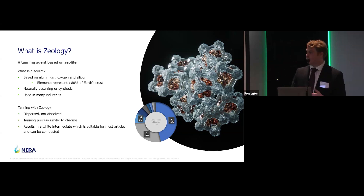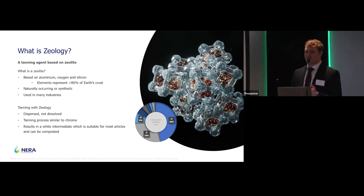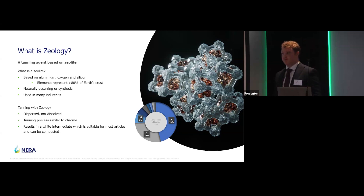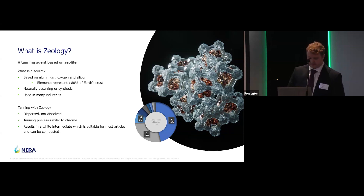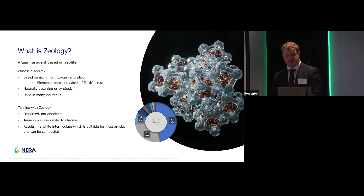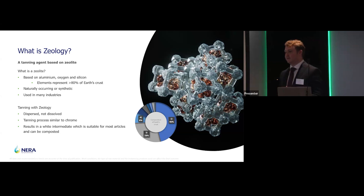In terms of leather, a couple of things to know. First of all, it is not soluble in the float that we add it into — so it is dispersed, not dissolved, like you would see with chrome. But apart from that, generally the tanning process that you carry out is very similar to that of chrome. What you get at the end of it is a white intermediate with a shrinkage temperature somewhere in the region of 70 degrees, which is suitable for most end articles, and at the end of its life can be composted.